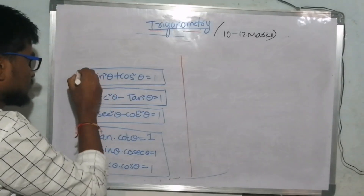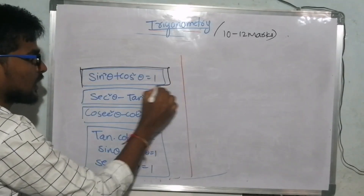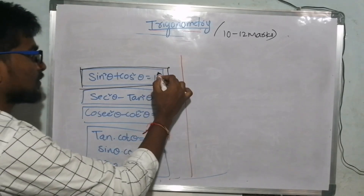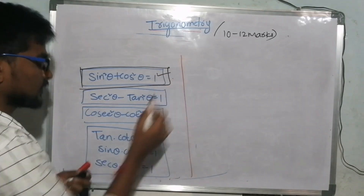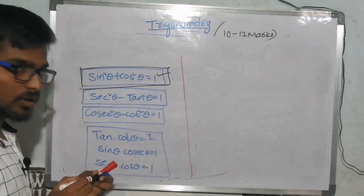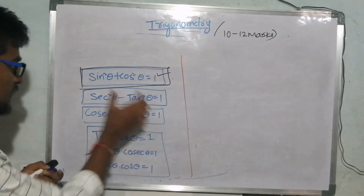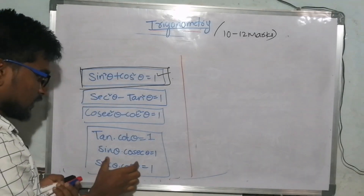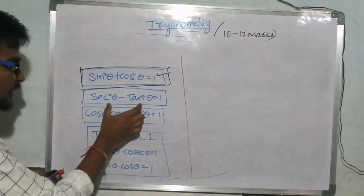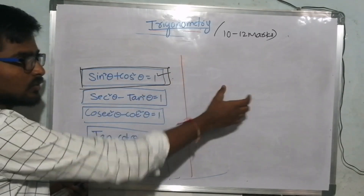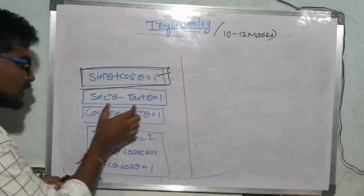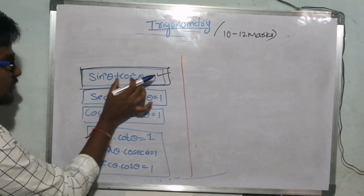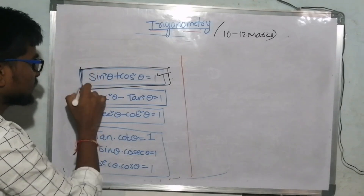So, we have to choose a lot of formulas. Let's check the first method. Here we have to choose some small formulas. So, we have to choose this method — we have to choose some small formulas.